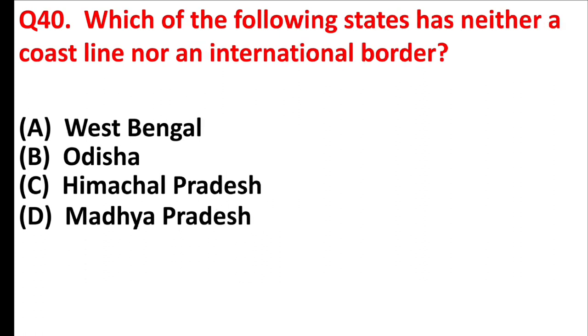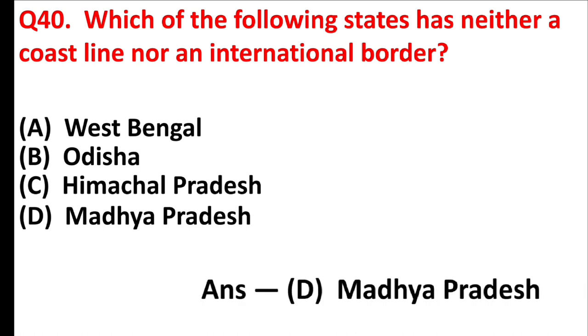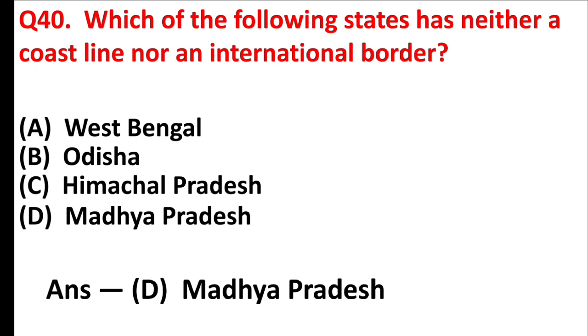Which of the following states has neither a coastline nor an international border? Answer is Option D, Madhya Pradesh.